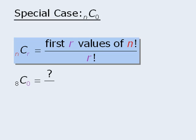Now the denominator equals 0 factorial, and we know that 0 factorial is equal to 1. So the denominator isn't really a problem here.